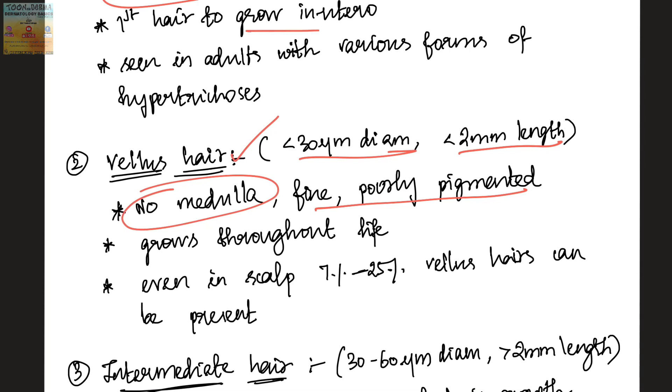Vellus hair grows throughout life. In certain types of hypertrichosis, lanugo hair can be seen in adults. In scalp, 7 to 25 percent of hair can be vellus hairs. The remaining will be terminal hairs.